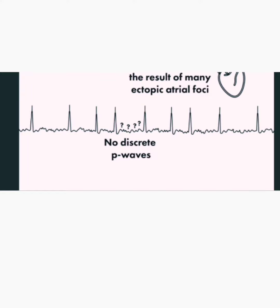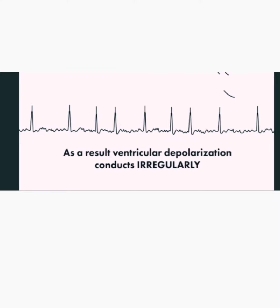Atrial fibrillation results from many ectopic atrial foci depolarizing almost simultaneously. As a result, ventricular depolarization conducts irregularly.